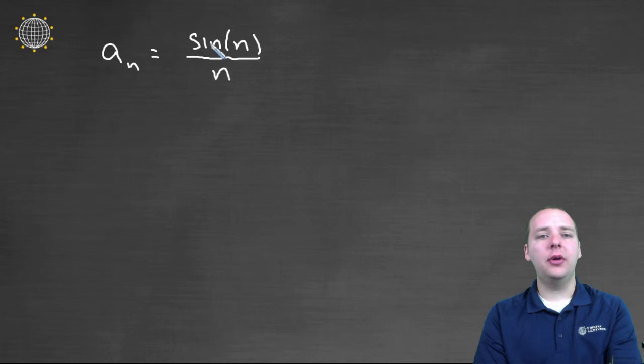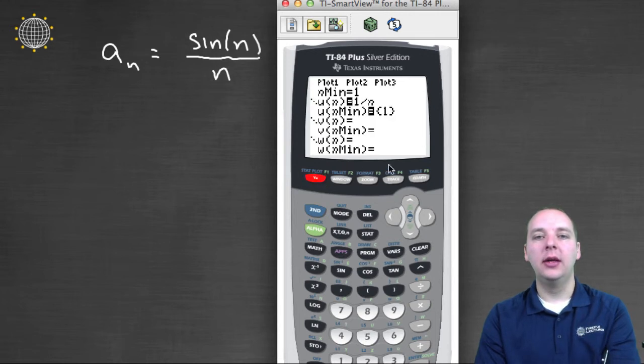Well, I don't know the sine of one. One is not on the unit circle as an angle. I don't know the sine of two, the sine of three, the sine of four. Those aren't nice unit circle angles. I have no idea what those would be.